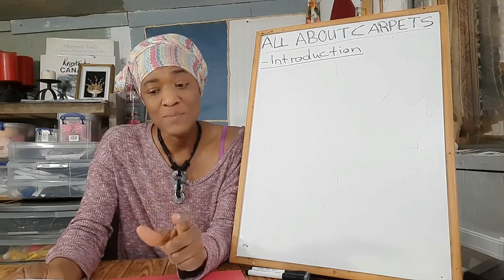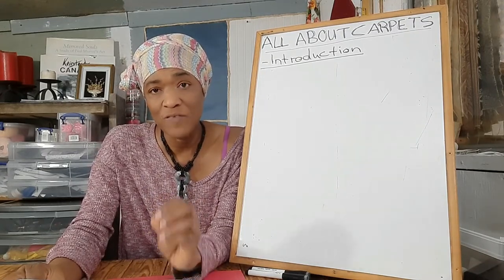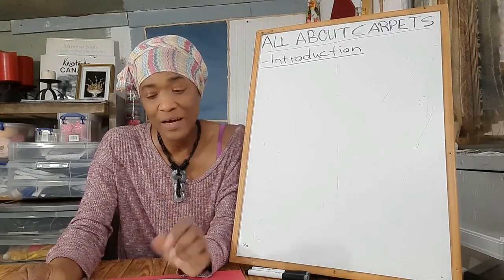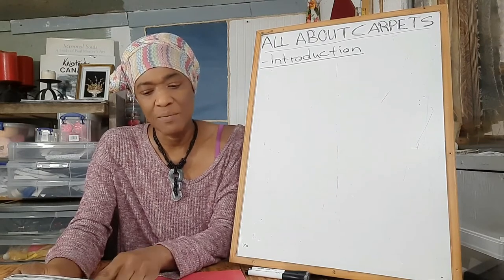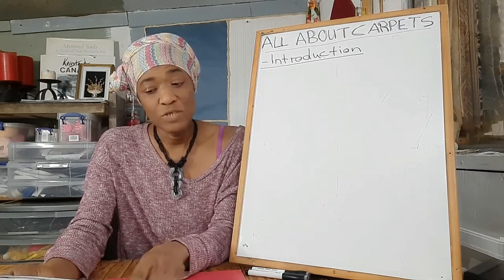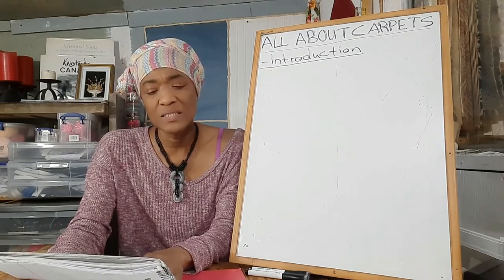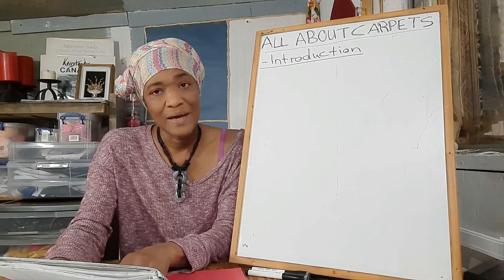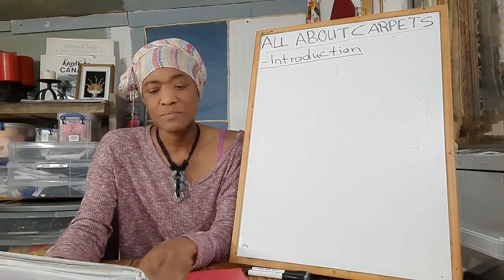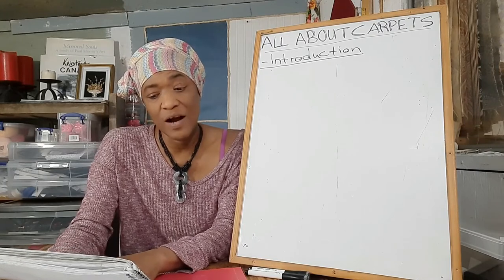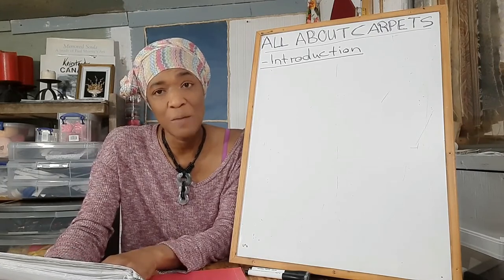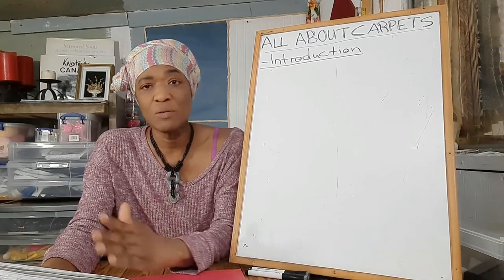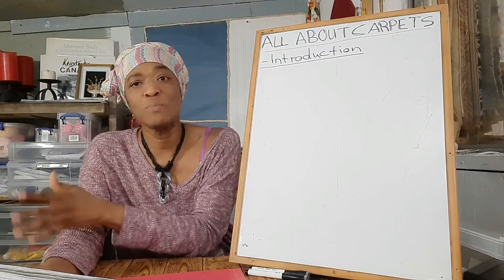Then we'll cover advantages and disadvantages of different types of carpet, carpet fibers and durability. We will also be looking at the types of carpet fibers because that will actually influence the durability of the carpet. Other topics include factors to consider when purchasing carpets, measuring and estimating for carpet, carpet care, things to be aware of after installation, and the maintenance of carpet to extend its life.